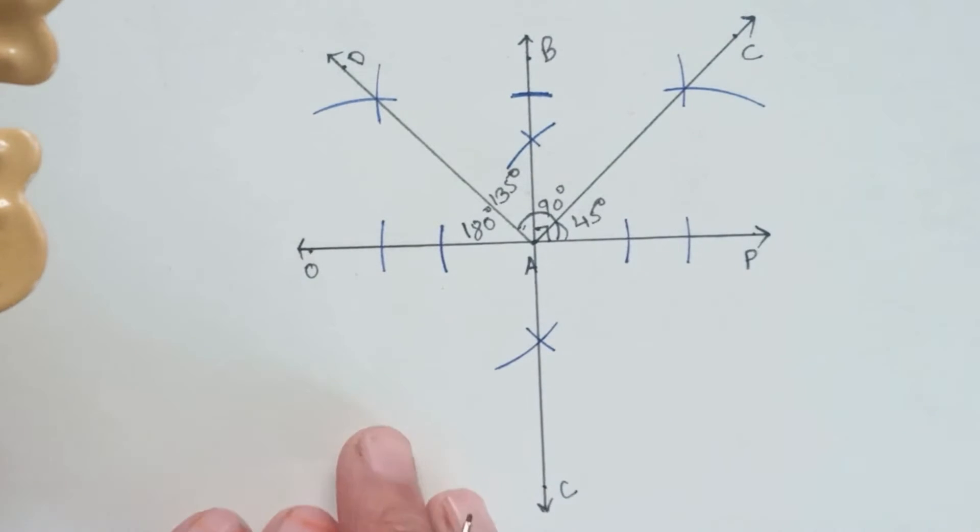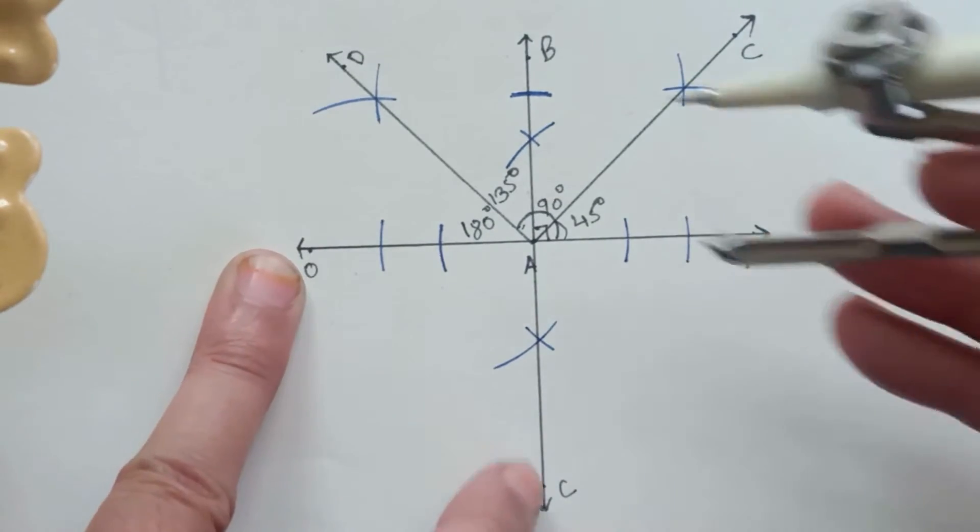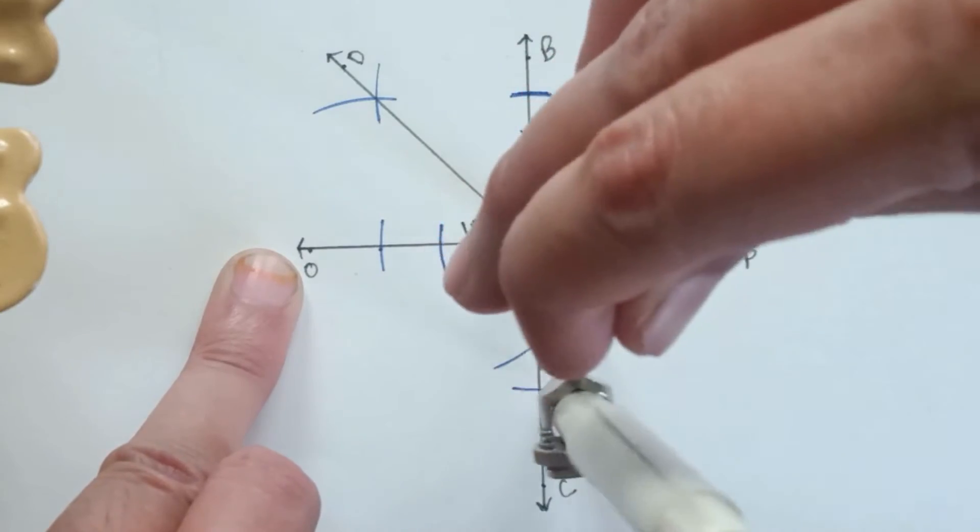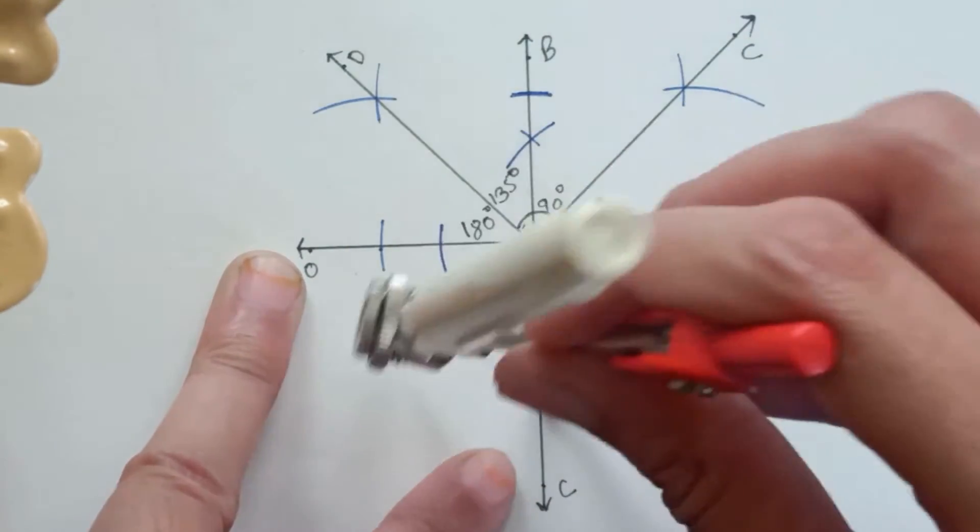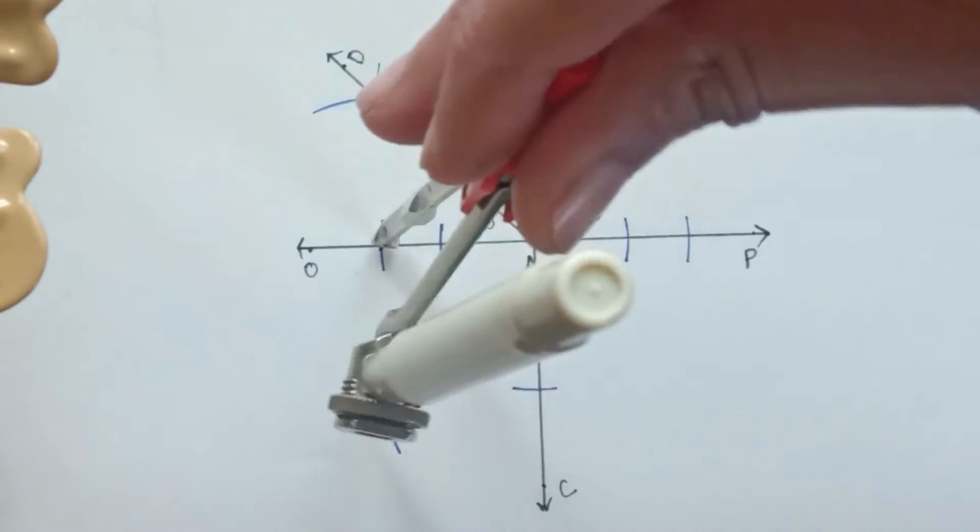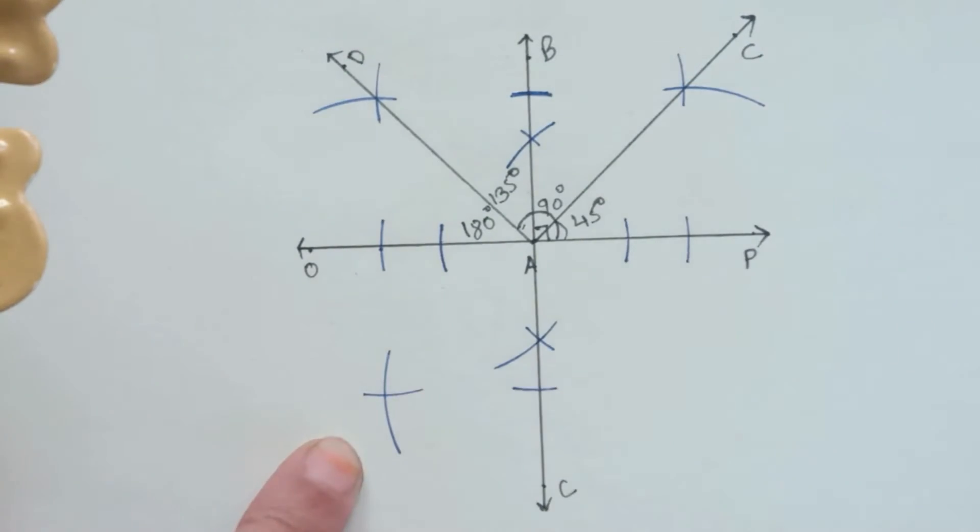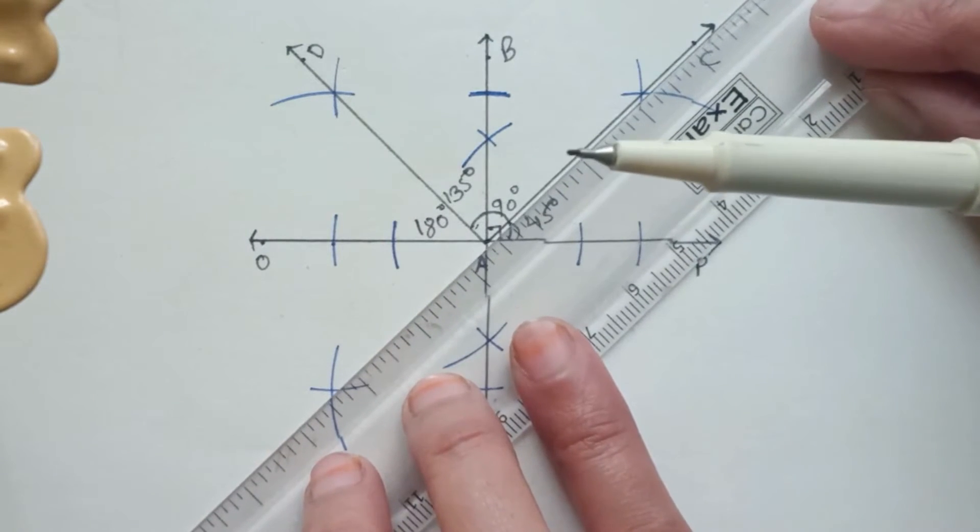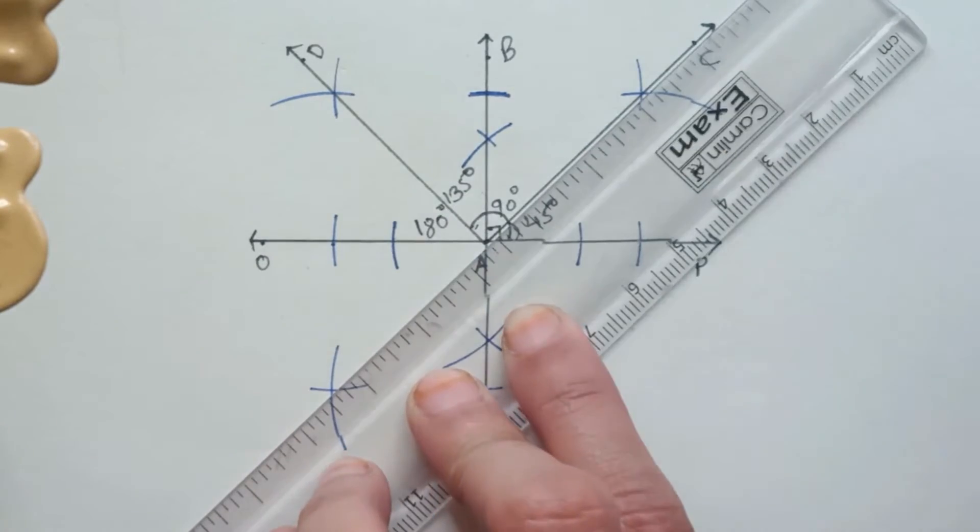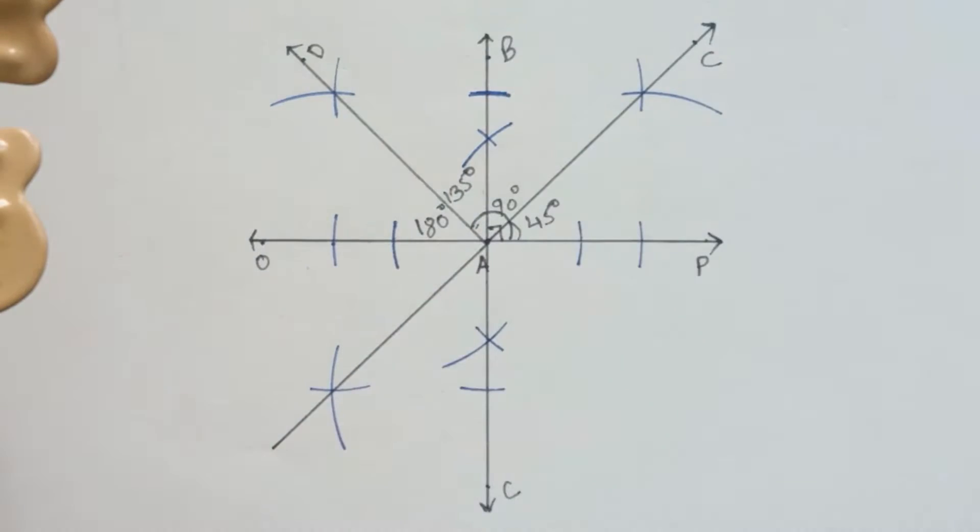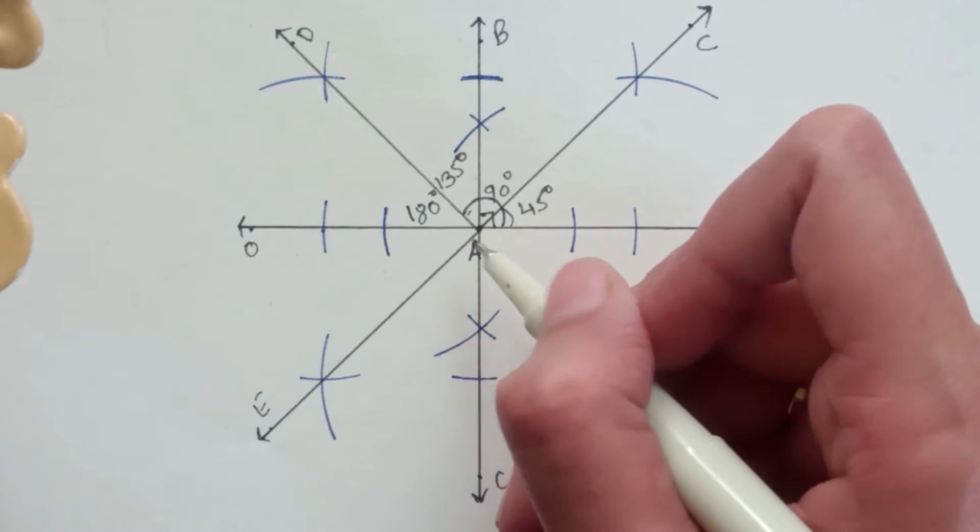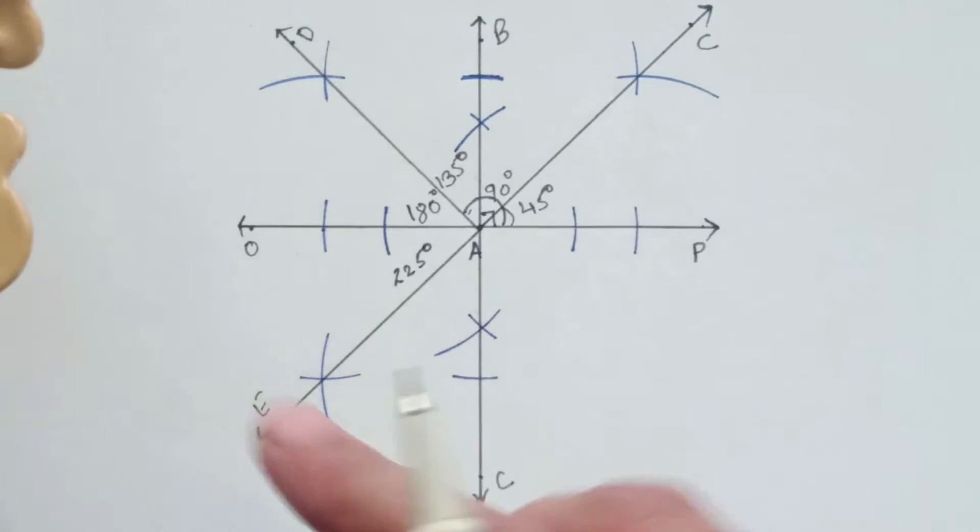Now we have to draw 225 degrees of angle which will be in between AO and AC. So we will perform the same procedure. We have got this one point, we will mark one arc on OC, then draw two intersecting arcs. Got one point, join it with A. Let's name it P and then this entire completely will become a 225 degrees angle.